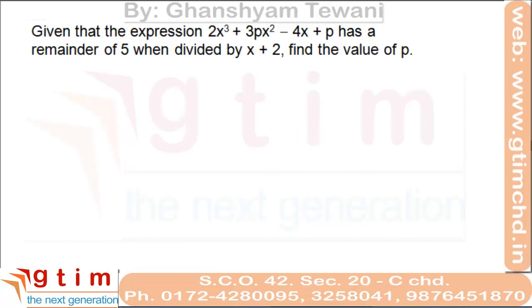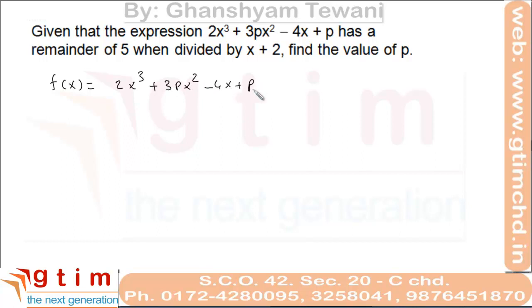Try this question. We have f(x) equal to this expression. What is the remainder when we divide this by x plus 2? That will be f(minus 2). Now it is given that the remainder is 5, then we compare f(minus 2) to 5.